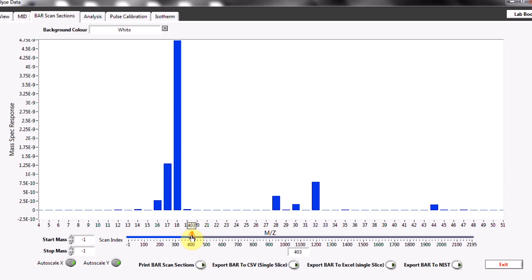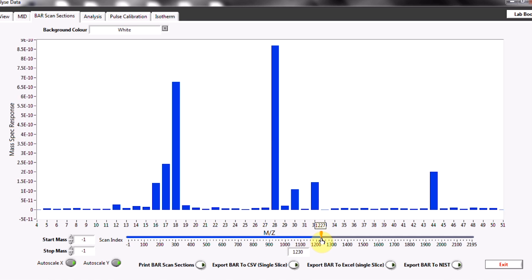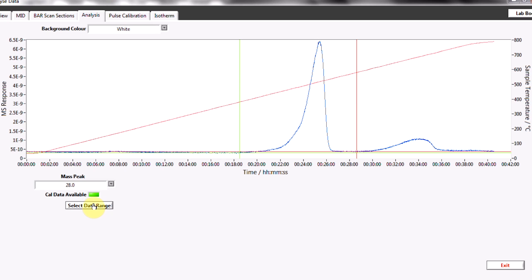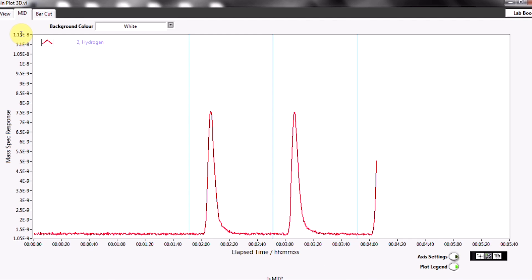With the measurement completed, the data can then be analyzed using the included data processing features. These include peak integration and deconvolution, metal surface area and dispersion calculations, uptake and adsorption isotherms. Data can also be easily exported to any other data analysis package such as Excel or Origin.